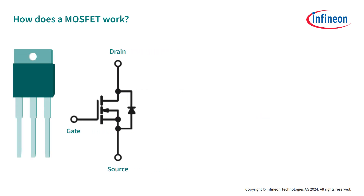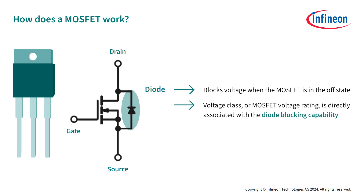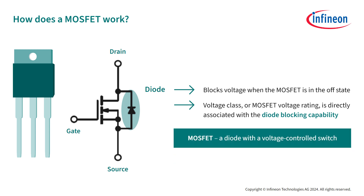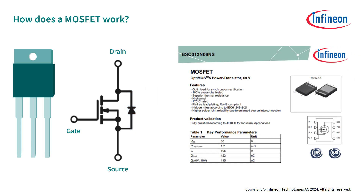Moreover, the MOSFET contains an inherent body diode. This diode is very useful because it can block voltage when the MOSFET is in the off state. The voltage class or the MOSFET voltage rating is directly associated with the diode's blocking capability. Therefore, the MOSFET can be seen as a diode with a voltage-controlled switch. These ratings are available on the front page of the MOSFET datasheets.